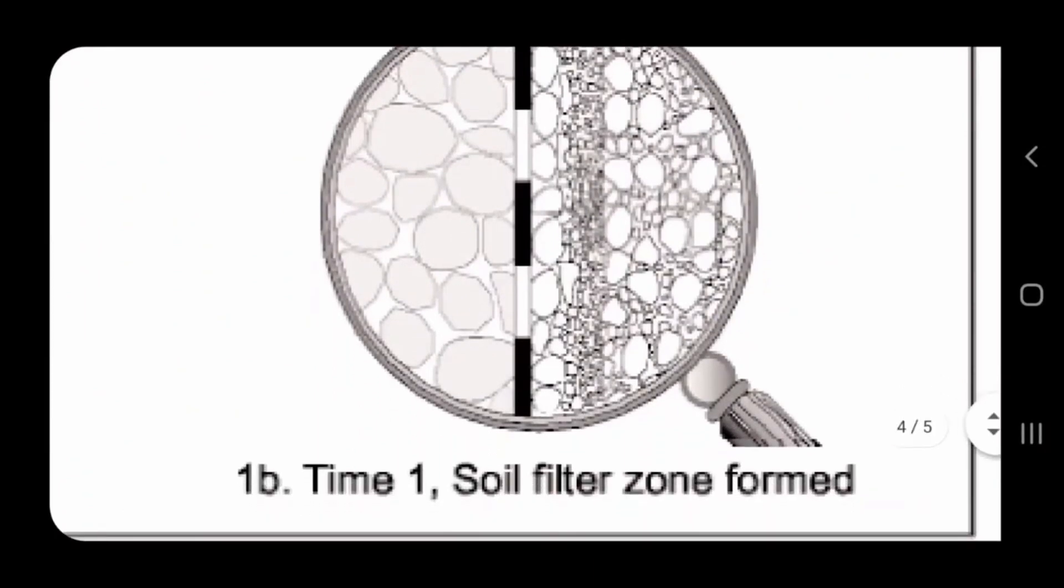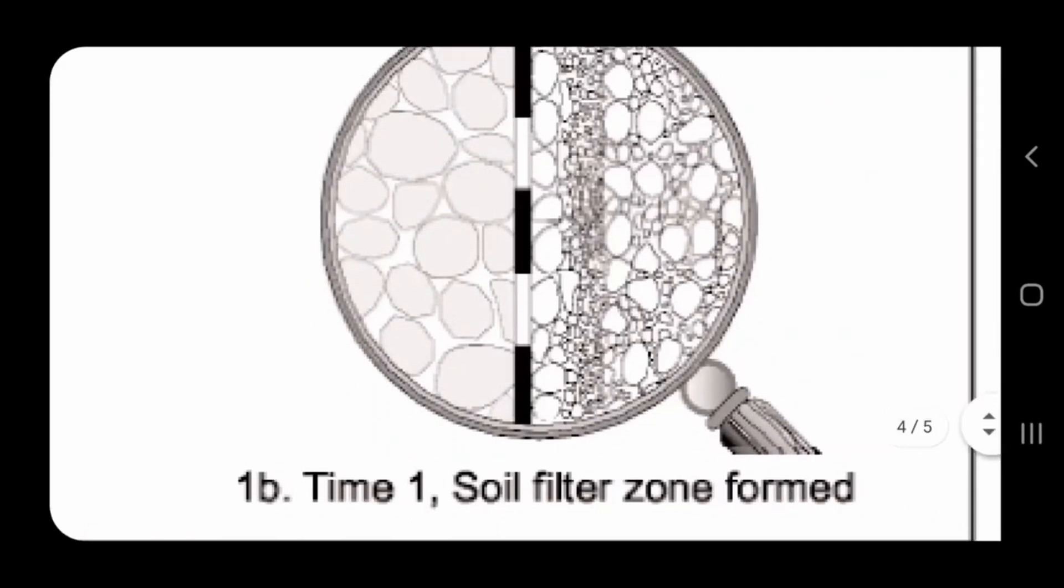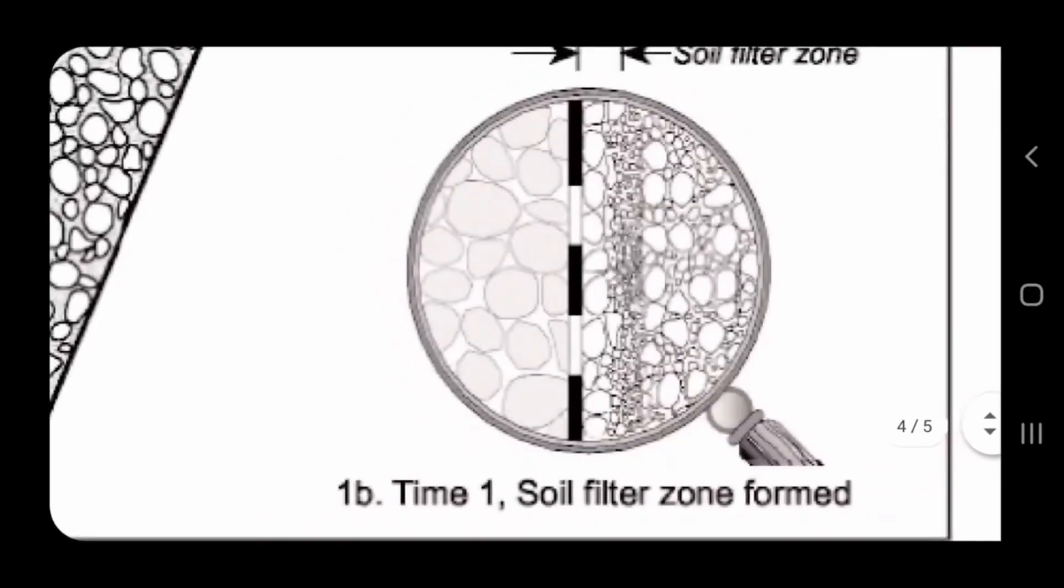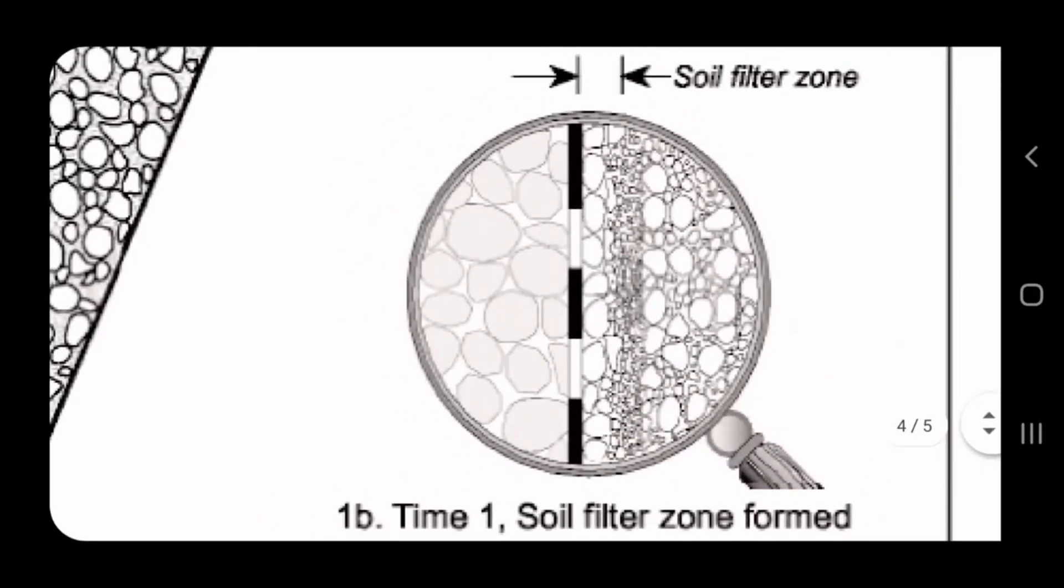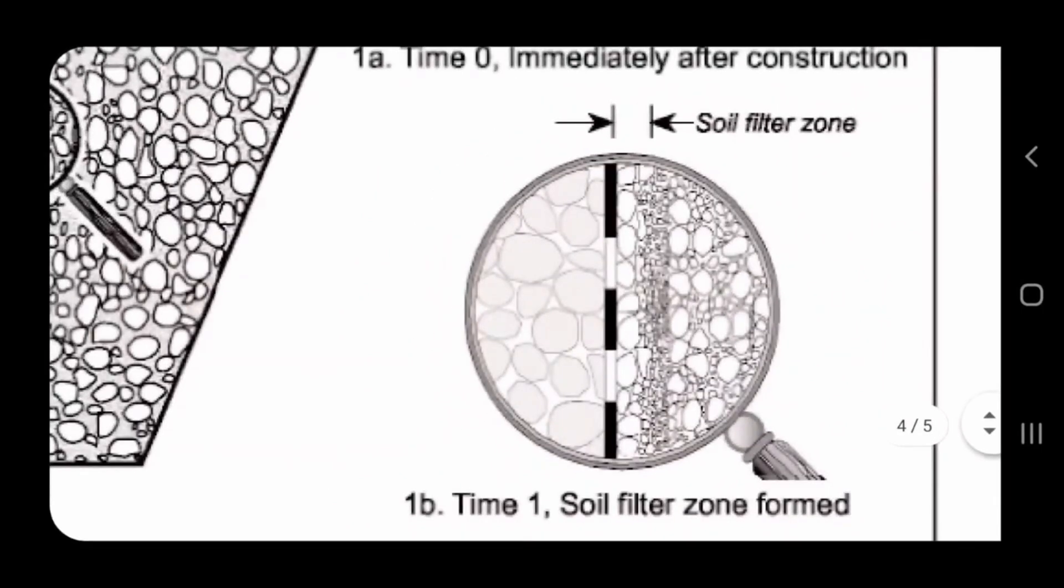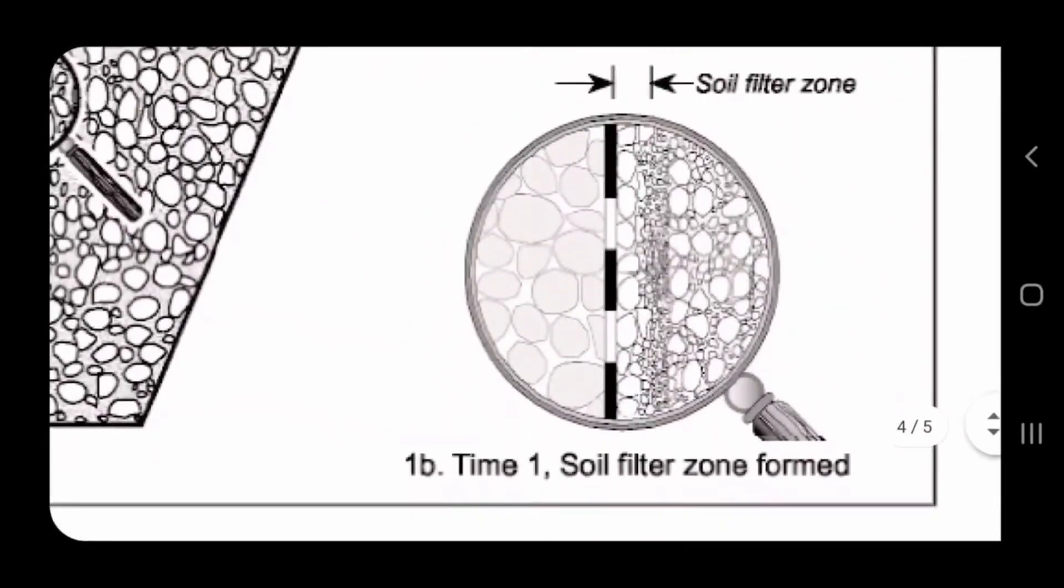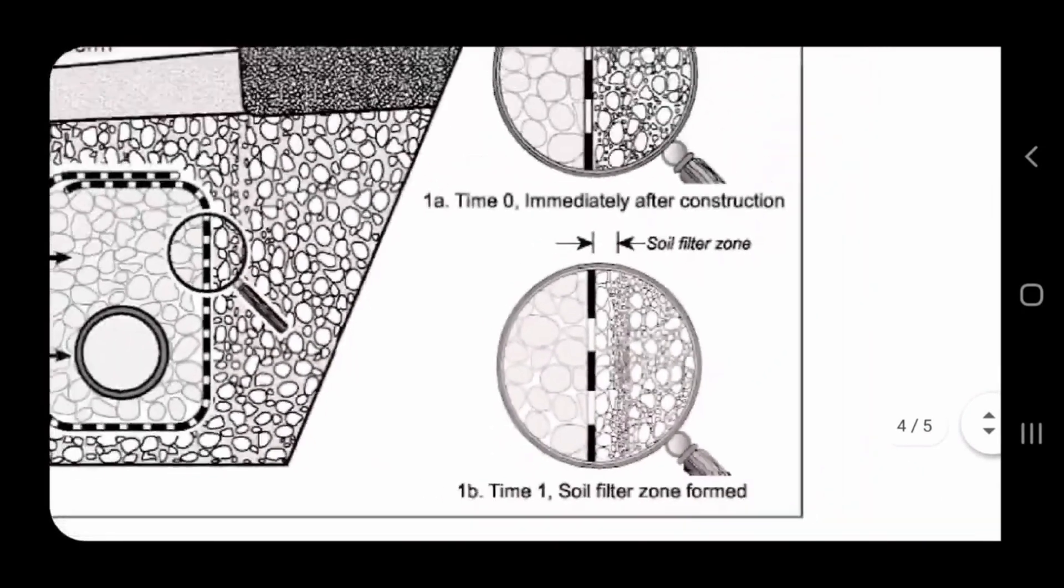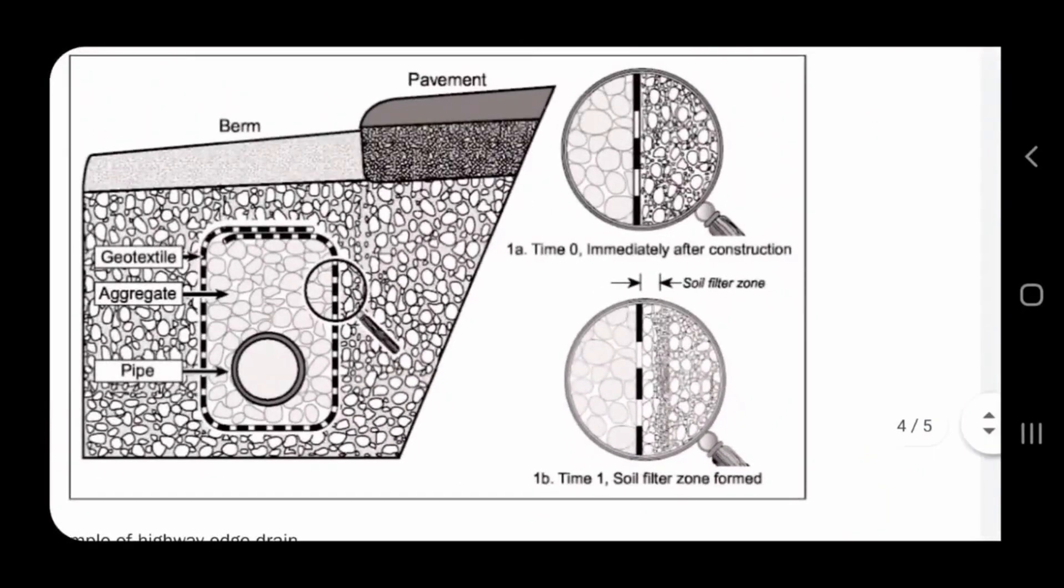The reason why our fabric works better and better and better is because as time goes on and more sediment washes through the non-woven geotextile double punch fabric, the better the soil filter zone that is formed becomes. This soil filter zone that forms between the non-woven geotextile fabric that's double punched and the native soil, that is key.